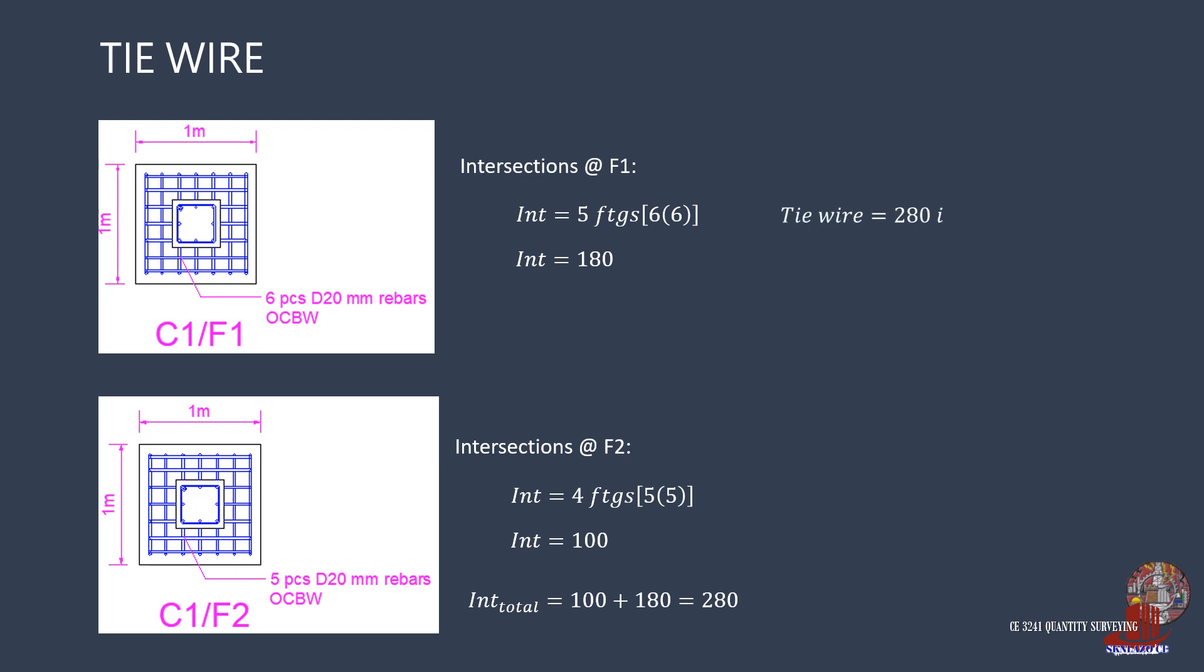The tie wire is further solved as 280 intersections of 0.3 meters length per intersection, and there are 53 meters in each kilogram. The footings require 1.58 kilograms of gauge 16 GI tie wire.